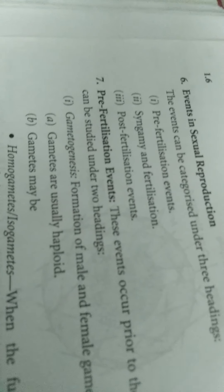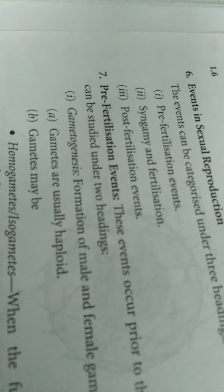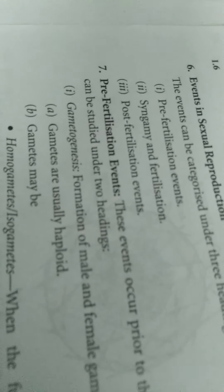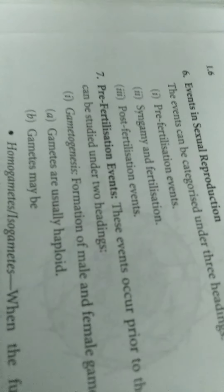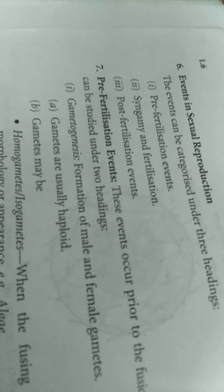Gametes are of two types. Homogametes or isogametes, where gametes are not differentiated into male and female gametes. Example is Chlamydomonas or similar algae.